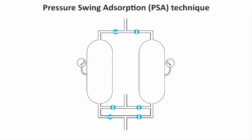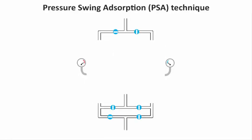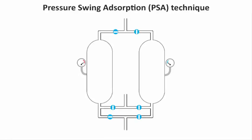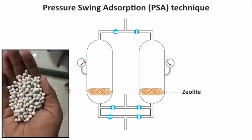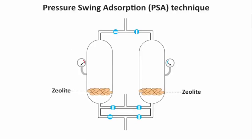Now let's see how PSA technology works. Two pressurized tanks or vessels are required, and at the bed level of these two tanks, zeolite pellets are placed to act as an adsorbent. The process starts when dry compressed air is blown through a valve into the first vessel, where the pressure inside the tank is built up to reach around 5 to 10 bar, or 70 to 150 psi.